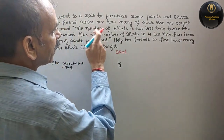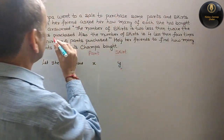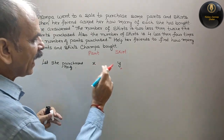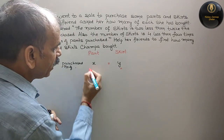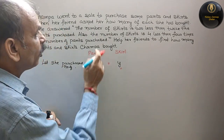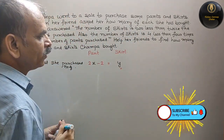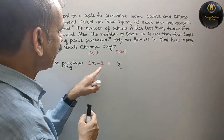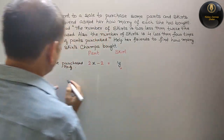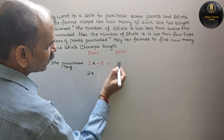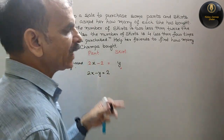The number of skirts is 2 less than twice the number of pants. That means y is equal to twice the pants minus 2, i.e., y = 2x - 2. Rearranging, the first equation is: 2x minus y is equal to 2.